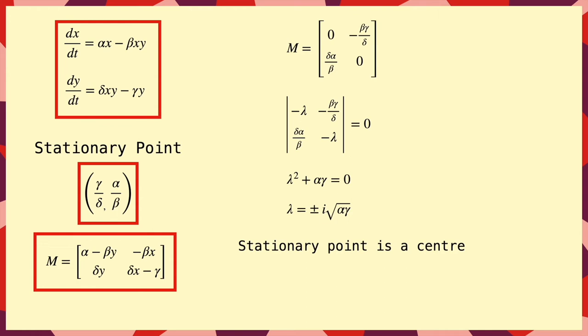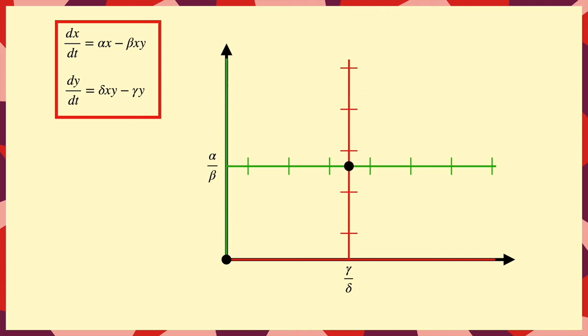And now that we know about the fixed points, we can draw our phase plane. Now, the nullclines split the plane into regions, and we want to quickly check the direction that x and y are moving in each region. This just helps us make sure that we draw the paths correctly. So we'll put a little arrow in each region to show whether x and y are increasing or decreasing.